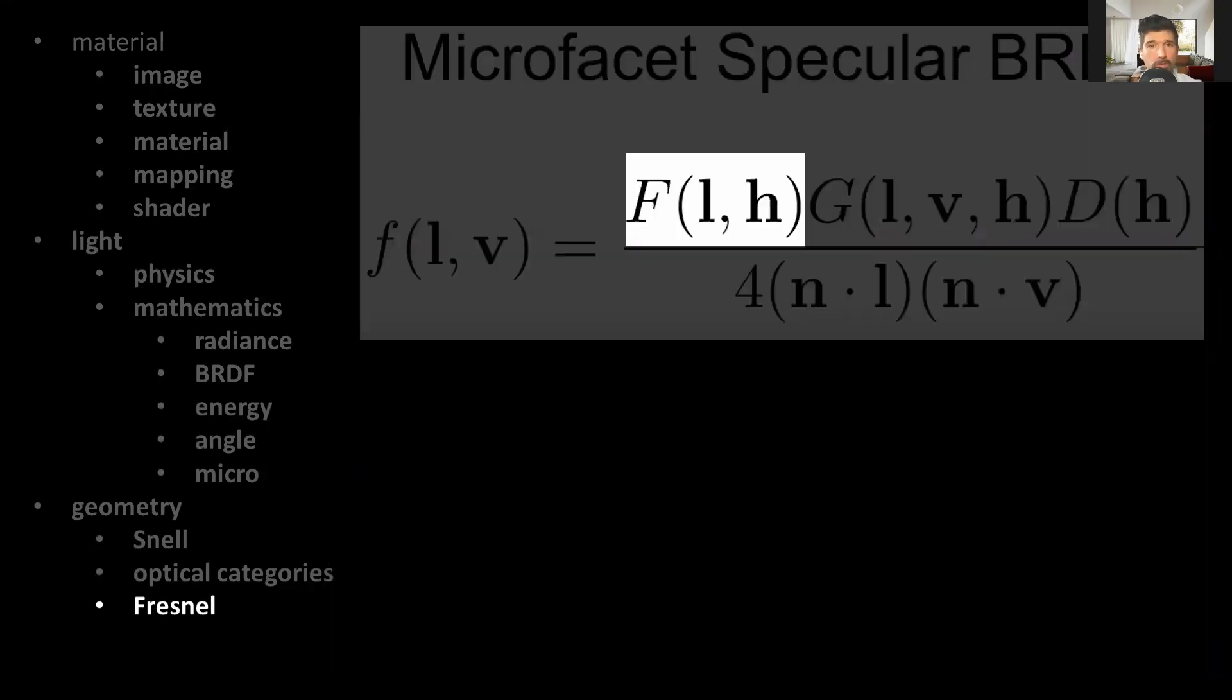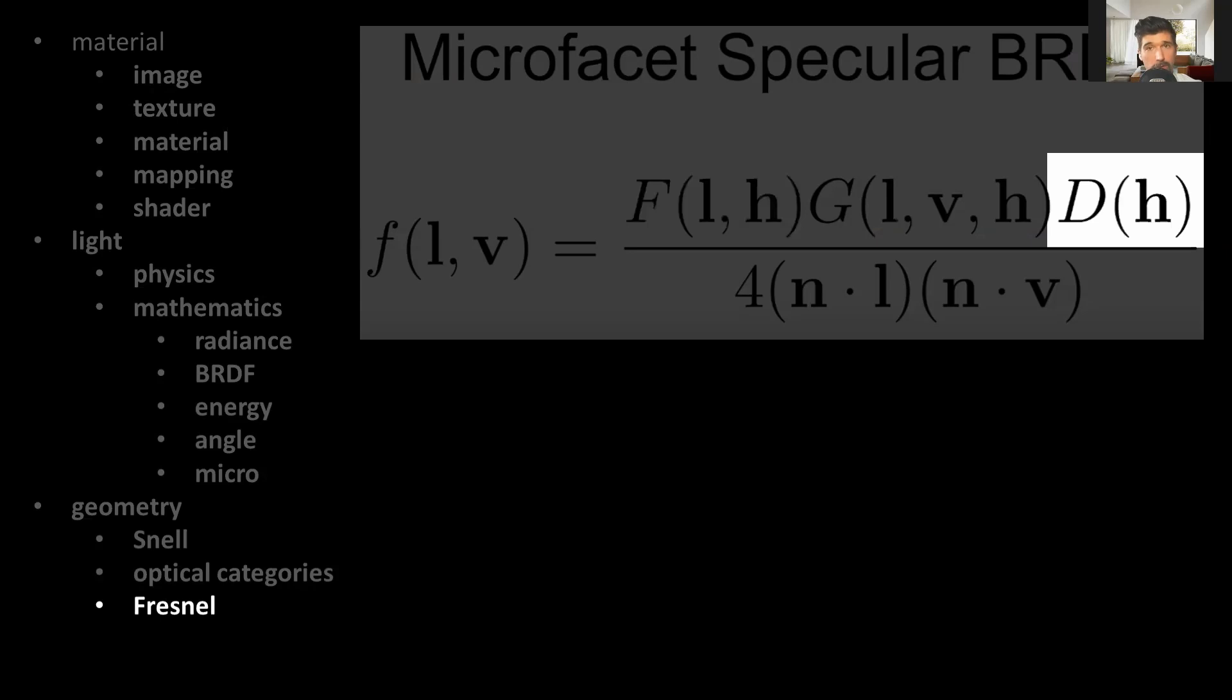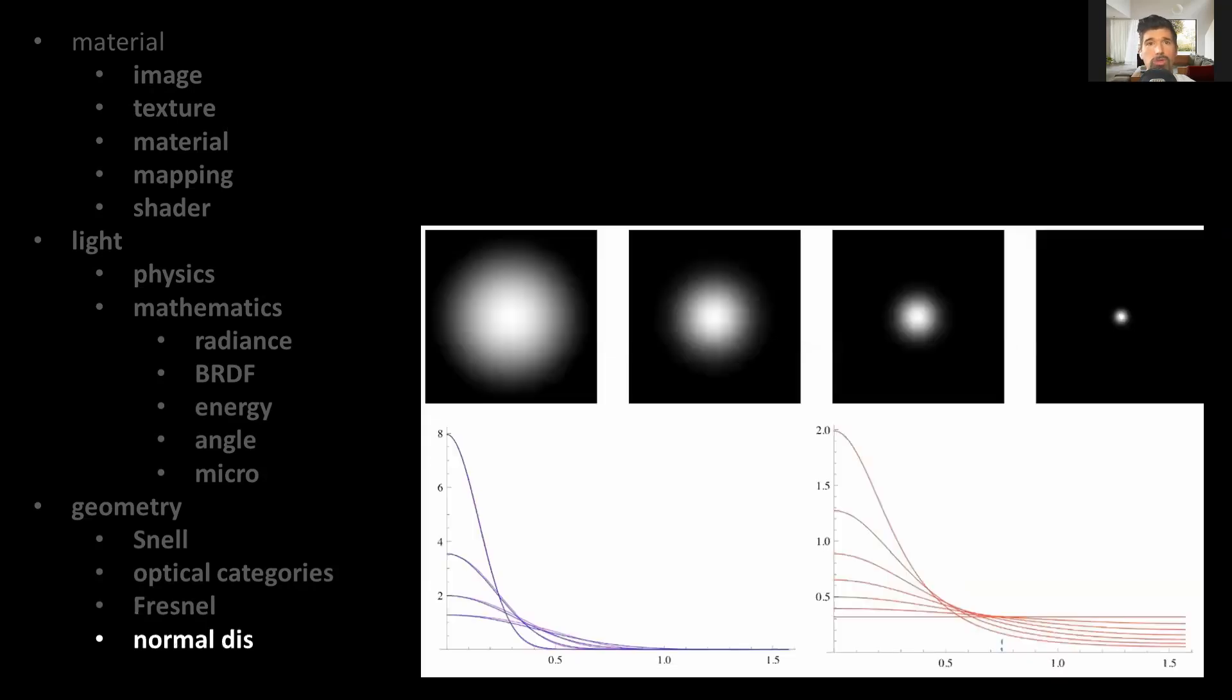Now that we've understood the Fresnel contribution to the BRDF, we can divert our attention to the next component, which is the normal distribution function. It is evaluated for the direction of the half normal. So out of all the microfacets, we are interested to see how many of them are facing in the right direction, which is to say how many microfacets' surface normals and their vectors are aligned to the half vector.